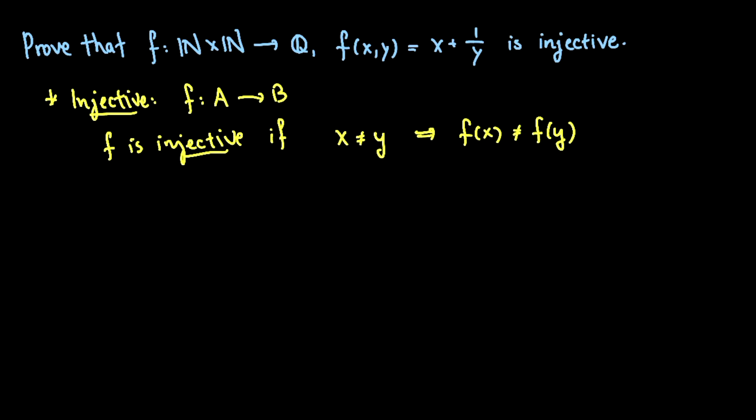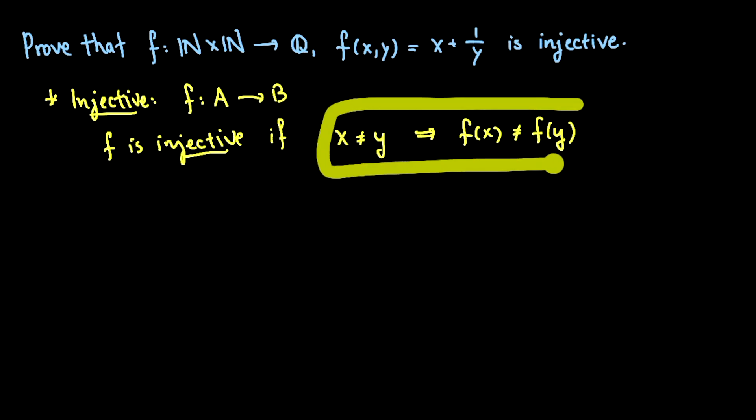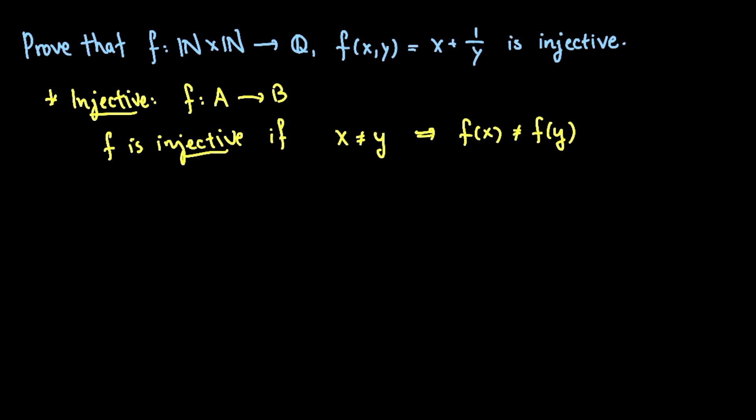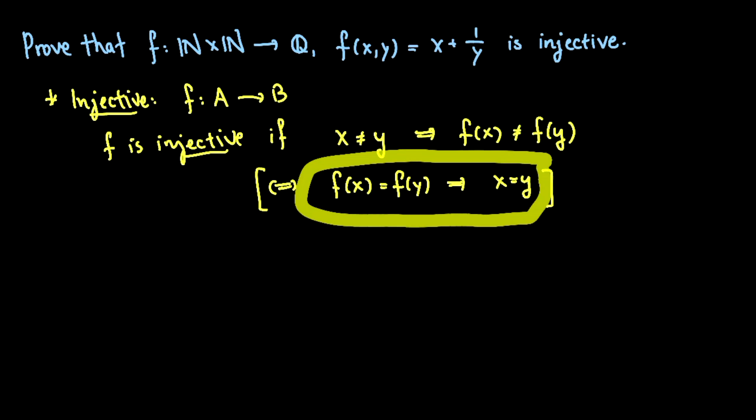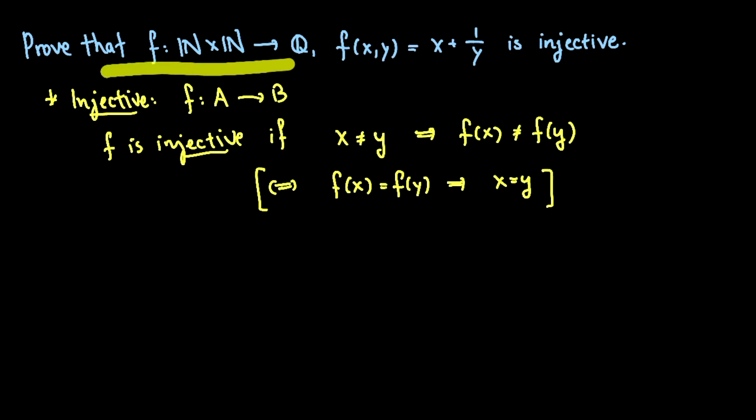Now another way to phrase this is I could take the contrapositive of this statement. Contrapositive is f of x equals f of y implies that x equals y. And this I find usually easier to prove injectivity using this contrapositive here. So let's prove this now.